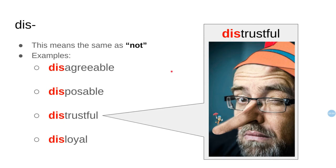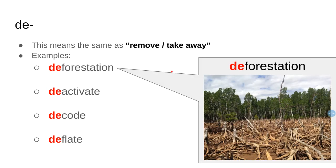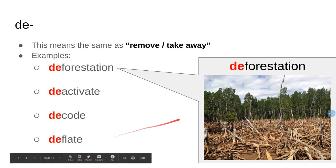Now we have 'de-,' which means remove or take away: deforestation, deactivate, decode, deflate. Look at this forest — it was cut down, taken away, removed. This is deforestation.